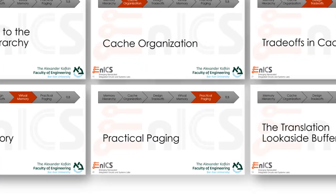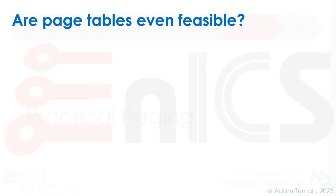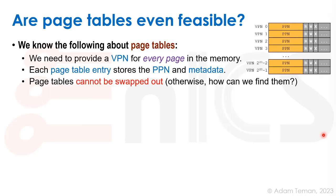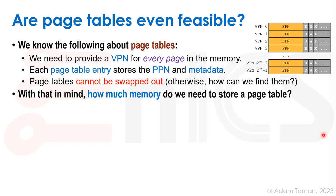Now that we know what virtual memory is, let's go into some practicalities. We discussed this whole thing called a page table and we had a wonderful solution, but is it even feasible? We know that we need to provide a virtual page number for every single page in memory, and each page table entry stores the physical page number and the metadata — all the RWX bits and so forth. Page tables cannot be swapped out, because if we swap out the page table we're not going to be able to find it.